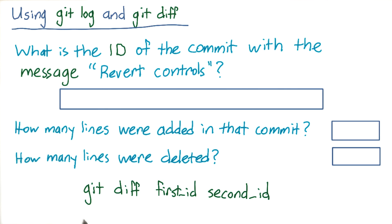Recall that to find the difference between two commits, you use the command git diff, the ID of the first commit, and then the ID of the second commit.